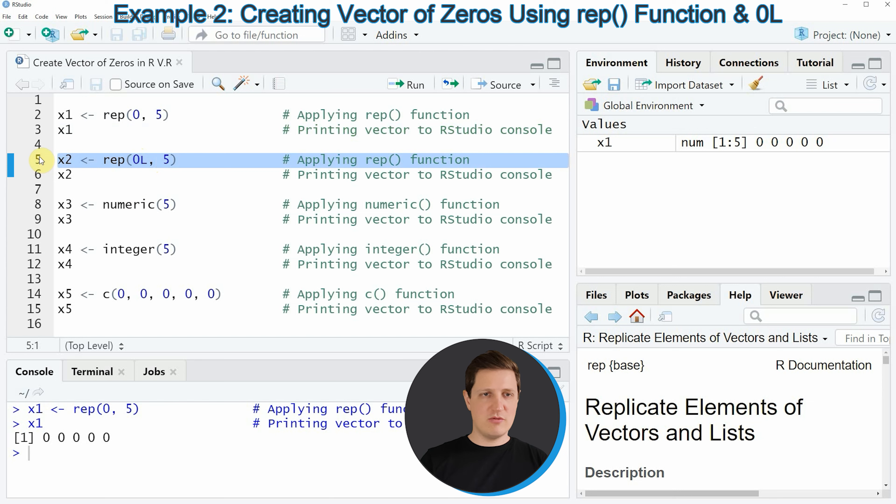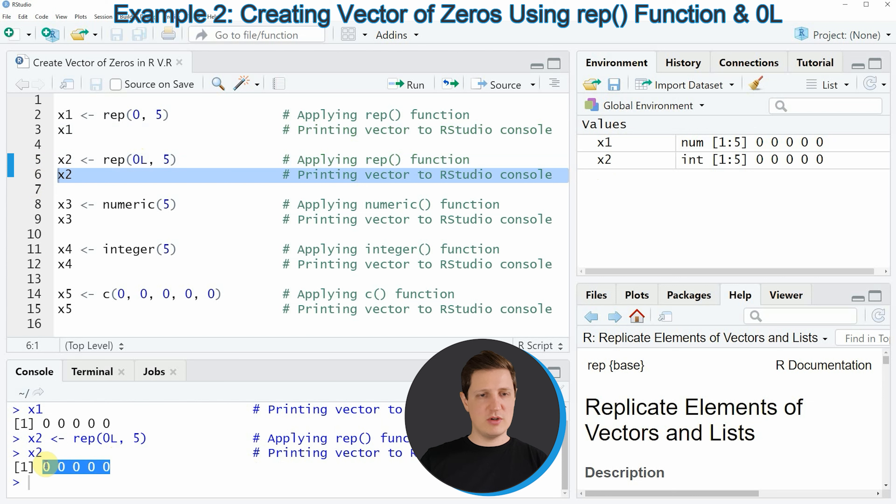If you run line 5 of the code you can see that another vector is created which is called x2 and this vector is also consisting of five zeros.